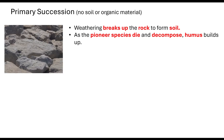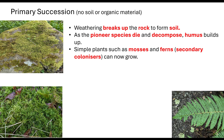Remember, we had our pioneer species — unfortunately, those pioneer species will not survive forever. They will die, and as they start to decompose, that builds up some of the humus in the soil. This means that simple plants can now start to grow — our mosses and ferns. These are called secondary colonisers, because they are not the primary species; they are the secondary colonisers of the area.